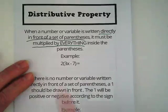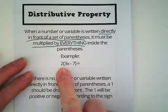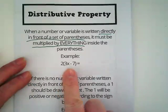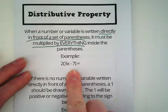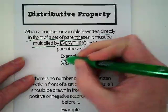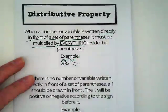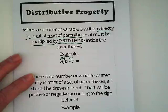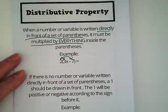So for example, this 2 is directly in front of this parentheses. 3x minus 7 is inside. There's no like terms to be combined. So we're going to draw what I call the claw to show that that 2 is going to be distributed to everything inside the parentheses.